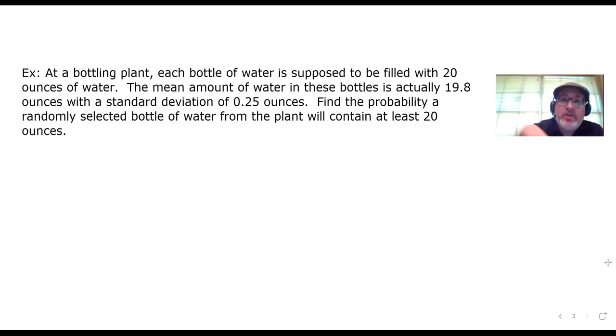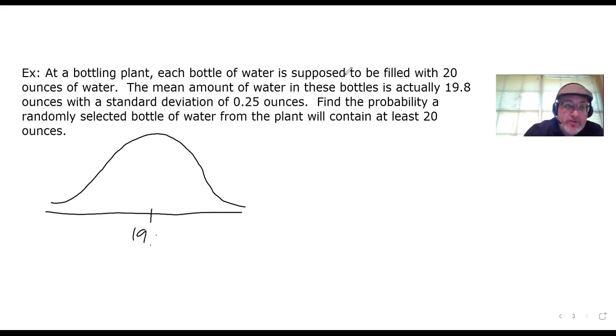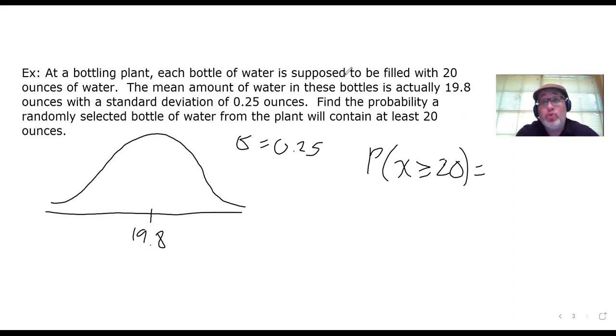Let's sketch the bell curve. It's always a good idea on any problem involving a distribution to sketch the picture. One number goes in the middle. Hint, it's not 20. The mean is actually 19.8 in this scenario. So that's what goes in the middle. And our standard deviation is 0.25. The question we're trying to answer is what's the probability that a randomly selected bottle's contents is at least 20, meaning greater than or equal to 20. For example, you can drink legally if you are at least 21. So you can be greater than 21 or actually equal to 21.